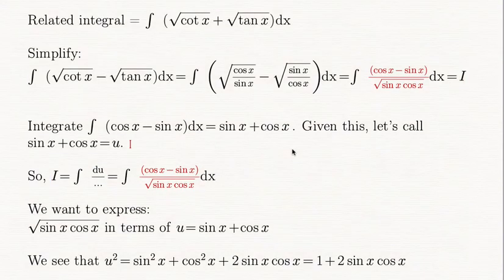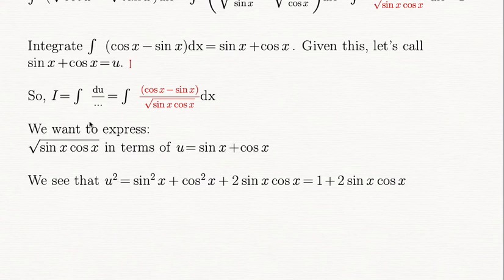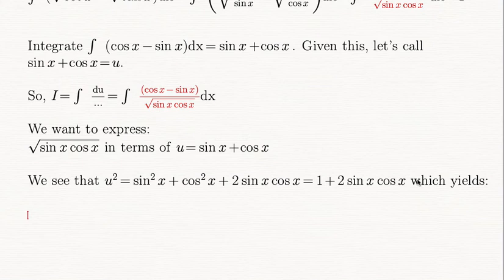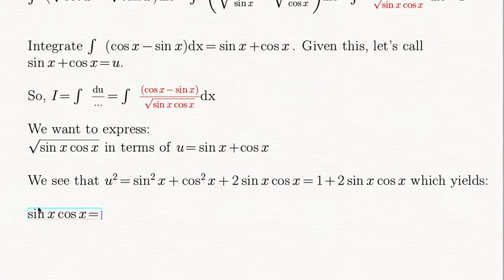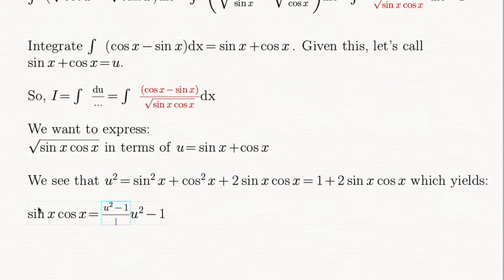So I = integral of du divided by √(sin x cos x), and we want to express the denominator in terms of u. From u² = 1 + 2 sin x cos x, transposing terms gives sin x cos x = (u² - 1)/2, and therefore √(sin x cos x) = √((u² - 1)/2).